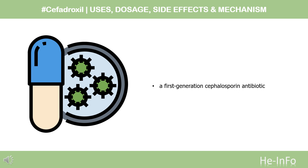Pharmacodynamics. Cefadroxil, a first-generation cephalosporin antibiotic, is used to treat urinary tract infections, skin and skin structure infections, pharyngitis, and tonsillitis.